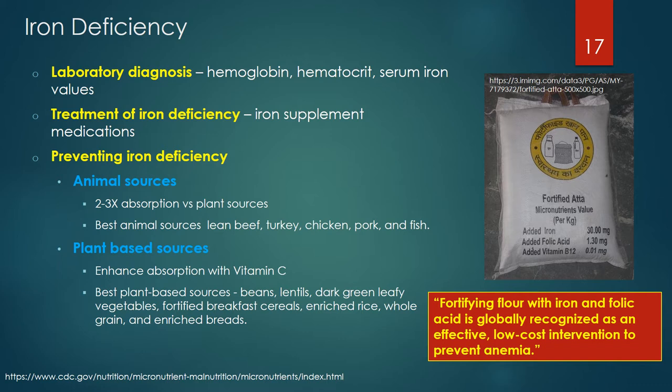Iron deficiency is commonly diagnosed by laboratory tests including hemoglobin, hematocrit and serum iron studies. Iron deficiency is treated with iron supplementation medications. Preventing iron deficiency through adequate dietary sources of iron helps improve children's learning ability and cognitive development. People absorb 2-3 times more iron from animal sources than from plant sources. When consuming plant sources of iron, adding vitamin C to the diet enhances the iron absorption rate.